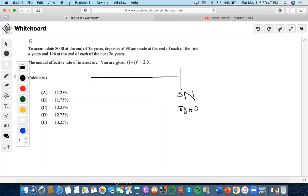Deposits of 98 are made at the end of each of the first N years, and then 196 at the end of each of the next 2N years. But all in all, these deposits need to accumulate to 8,000.